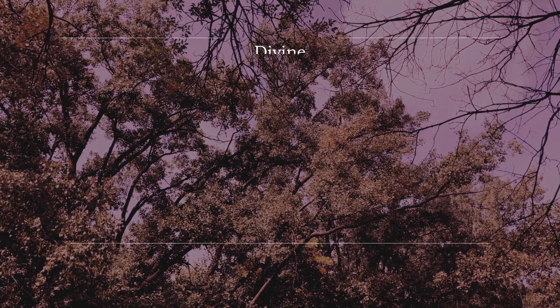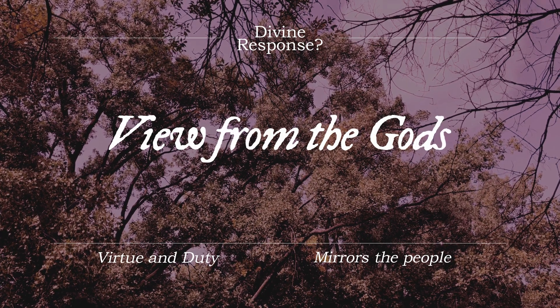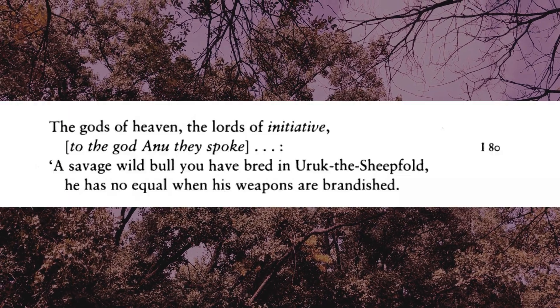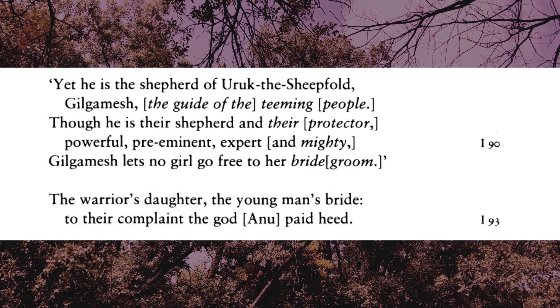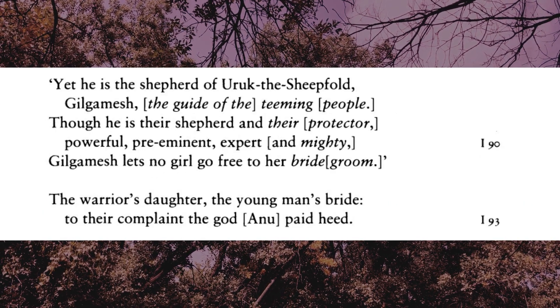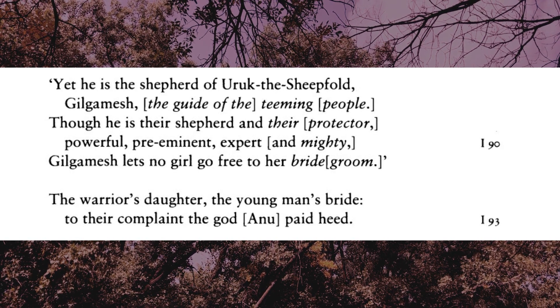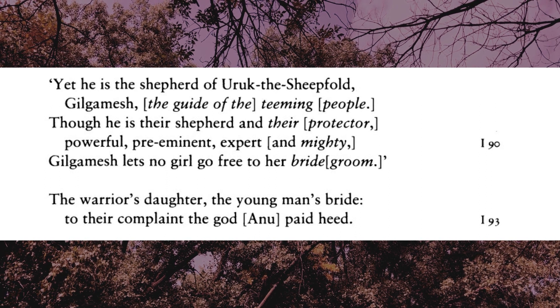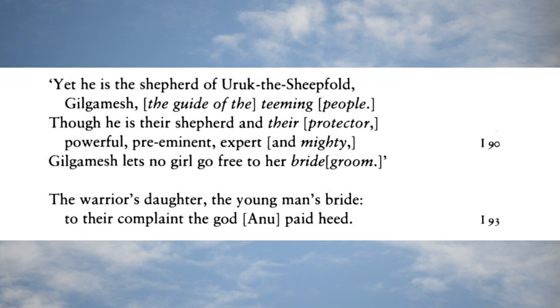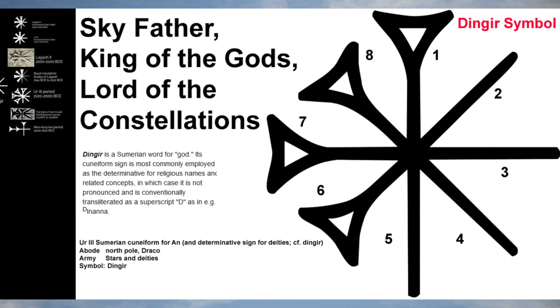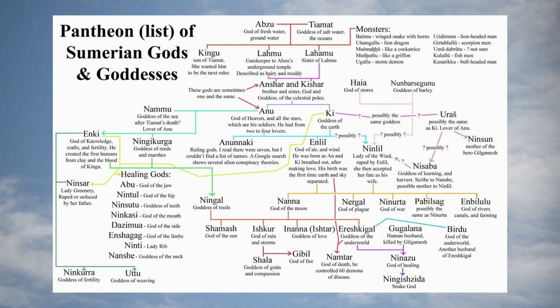Now we look more deeply at the divine implication of that conflict. The gods reference that Gilgamesh has no equal, his tyranny continues to get worse day by day, and that in spite of his divine role to protect his people, he is abusing his role and his people — something the gods recognize. The goddesses respond to the complaints of the women by relaying those complaints to the god Anu. Again, there's this existence of a chain of command and a hierarchy represented even amongst the gods.